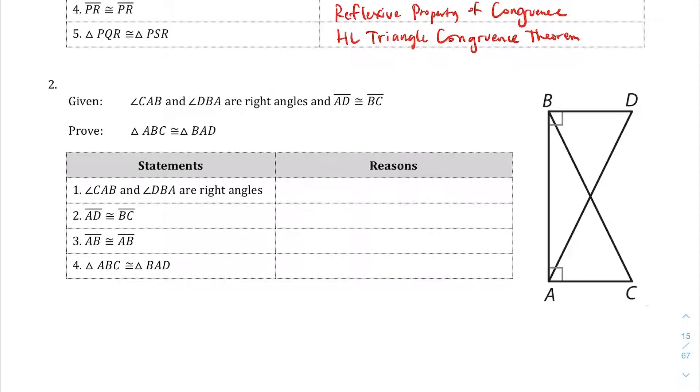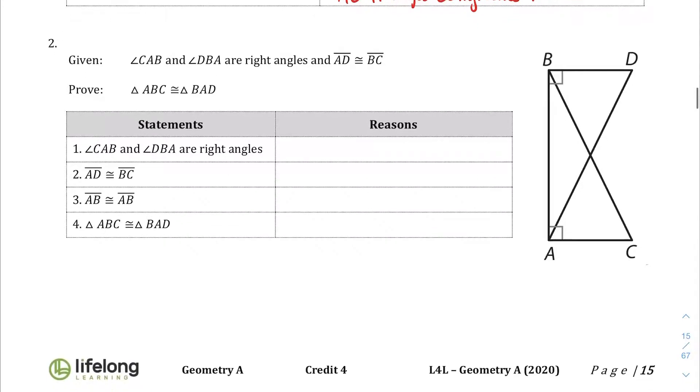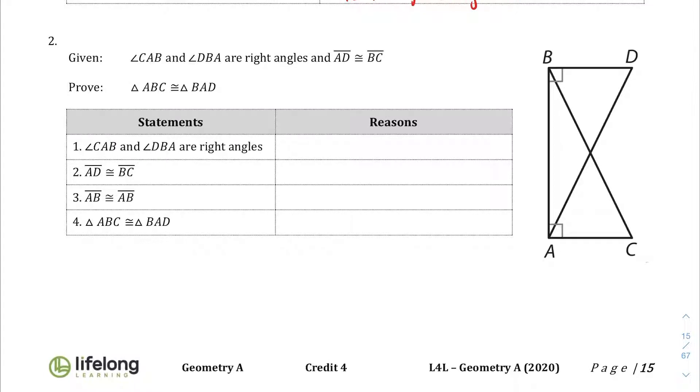Alright. Your Turn, question number 2. So we have this interesting drawing of triangle BD and triangle AC and two triangles right on top of each other, and it looks like they're sharing the side, by the way. But let's take a look at the given statements. CAB and DBA are right angles. So this angle right here and this angle right there are right angles because they have little tiny squares there. And AD is congruent to BC, so the hypotenuses. So the side across from the right angles, hypotenuse here and hypotenuse here are the same.